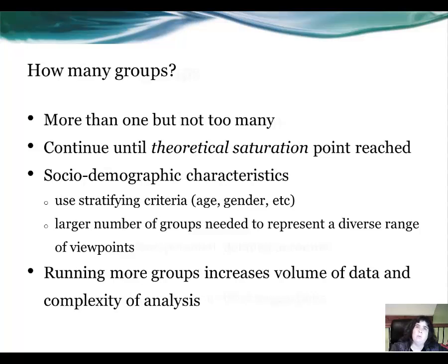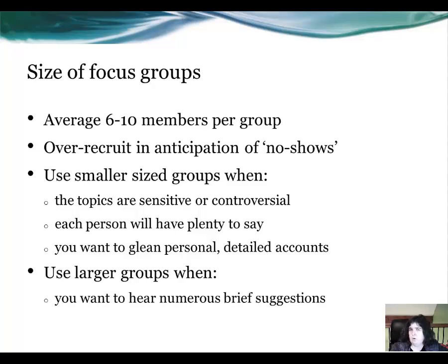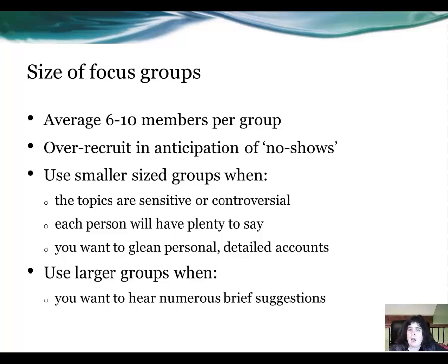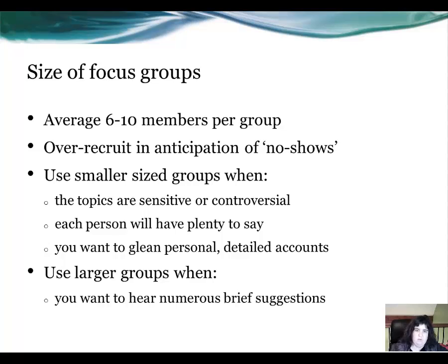How many participants in each group? Six to ten members are required per group, but in order to get six to ten people and to account for no-shows, you would need to invite about 20 to 25 people. When may we use the smaller number, like the six-member group? When you are discussing sensitive issues — issues that might cause shame or those which are controversial, but which have been approved by the Research Ethics Committee. Having the smaller group enables each person to have their say, and from that you can glean personal detailed accounts from individuals. Using larger groups, more towards your ten-member size, is appropriate where you want to have numerous brief suggestions from everybody.